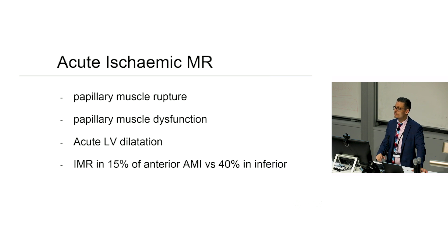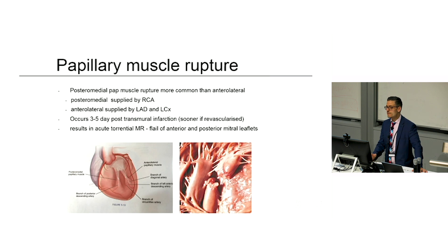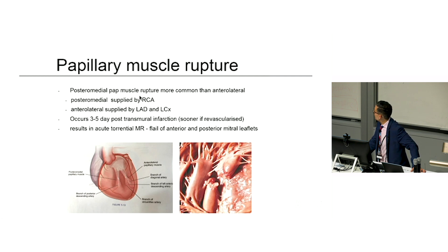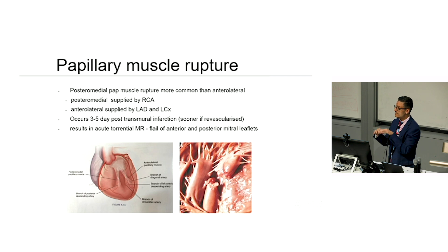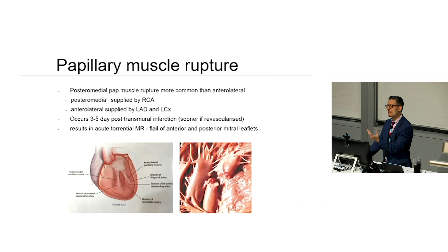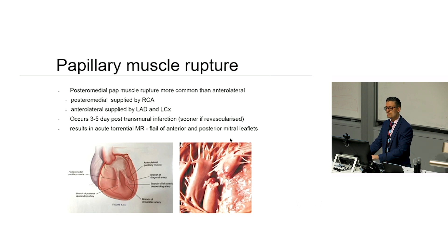MR occurs much more commonly with an inferior infarct than an anterior infarct. Papillary muscle rupture is more common with the posterior medial due to RCA occlusion, because the anterolateral papillary muscle is supplied by the LAD and the circumflex — dual blood supply — so it's less likely to be completely infarcted. Both anterior and posterior leaflets are attached to each papillary muscle, so if you lose the posterior medial, you get a flail of both leaflets at A3 and P3, presenting with torrential MR and cardiogenic shock.